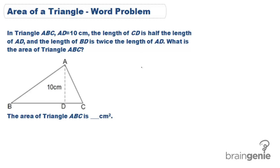Here's a tricky word problem asking us to solve for the area of a triangle. It says in triangle ABC, AD is equal to 10 cm — that's this line right here. The length of CD is half the length of AD, and the length of BD is twice the length of AD. What is the area of triangle ABC?